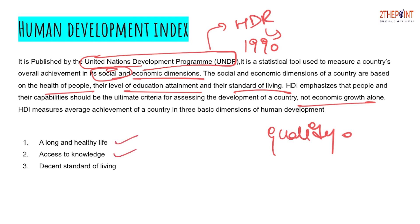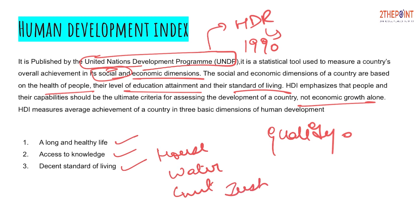The Human Development Index has three basic dimensions: first, a long and healthy life; second, access to knowledge; and third, a decent standard of living. This standard of living includes housing, water, clean environment, justice, and security — all counted under decent standard of living.